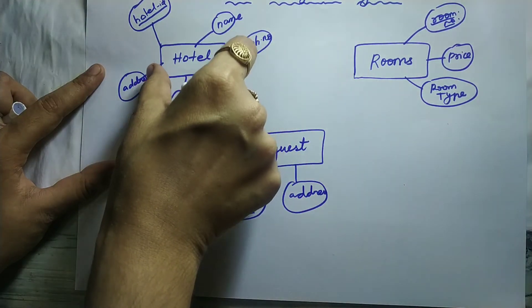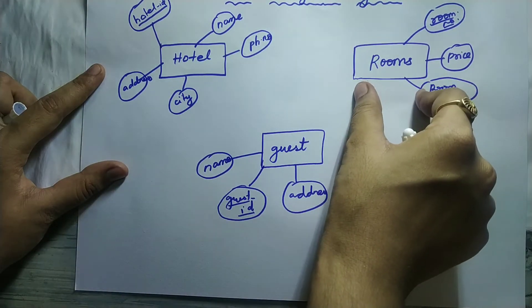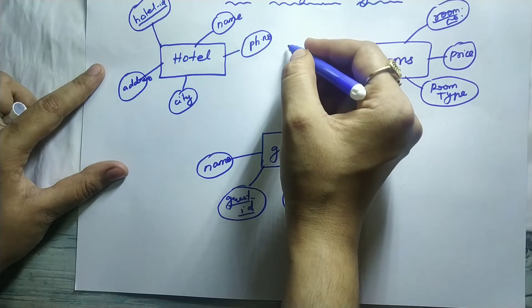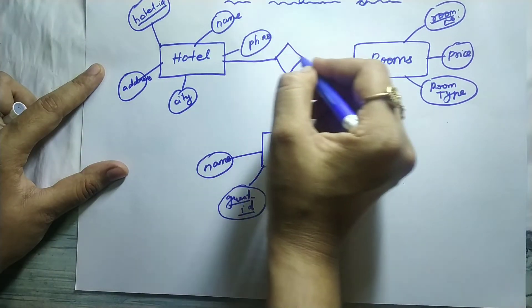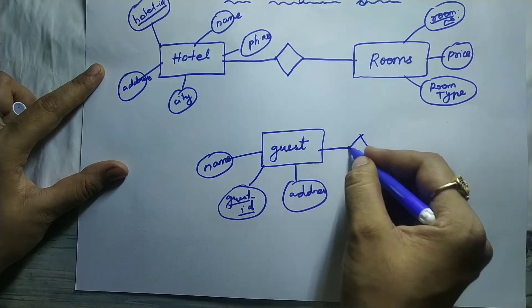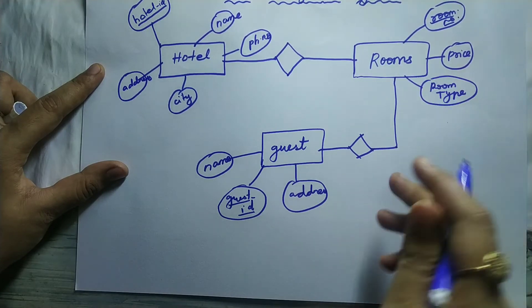So after filling this, we need to connect all the entities. So for connecting the entities, we use relationship which will be represented using a diamond box, and then I will connect using the lines. So diamond box is going to connect two entities. Diamond box is known as relationship.